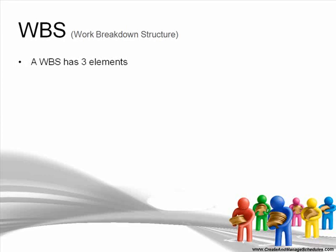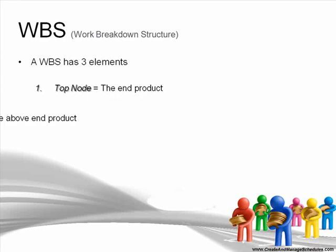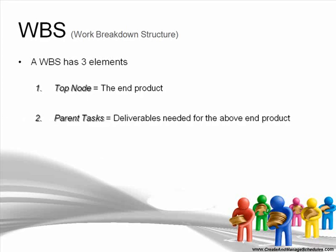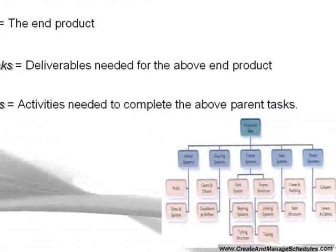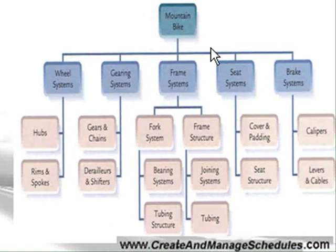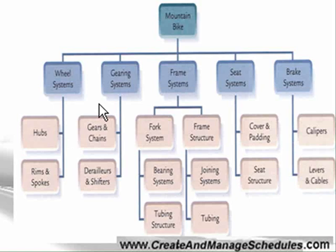The WBS has three elements: the top node, which is the end product; the parent tasks, which are the deliverables needed for that end product; and the child tasks, which are the activities needed to complete the parent tasks. In the diagram shown, the top node is the end product — a mountain bike. The parent tasks are the deliverables: wheel system, gearing system, frame system, seating system, and brake system. The child tasks are the activities relating to those deliverables.